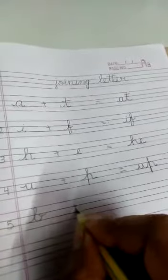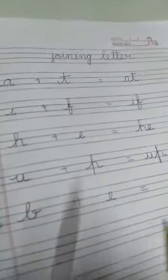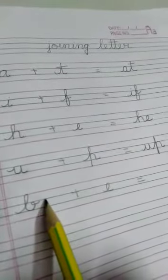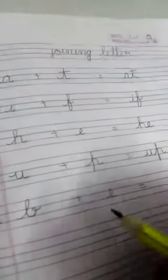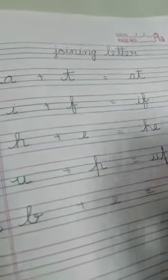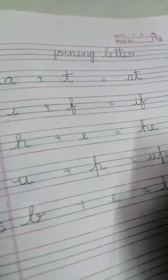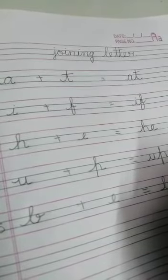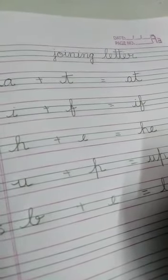The last example is B plus E. As you can see, B is having a tail but it is on the upper side, and E's tail is on the lower side. So what we have to do is tilt E's tail a little to the lower side and just continue the E like this.